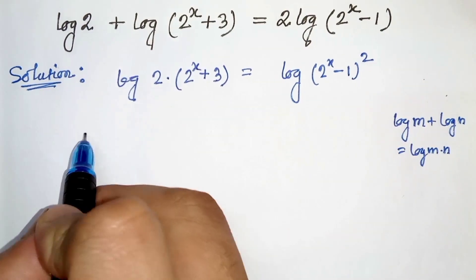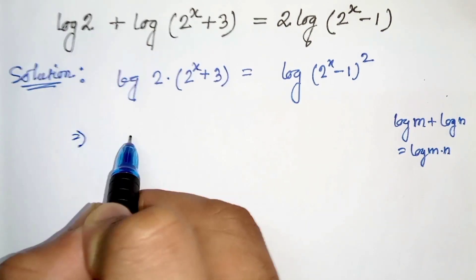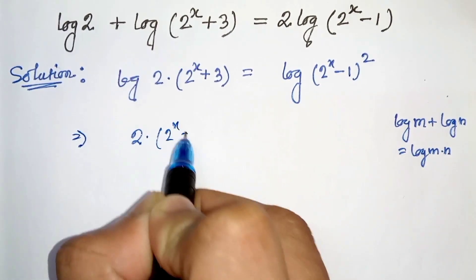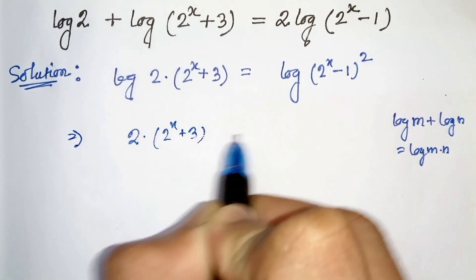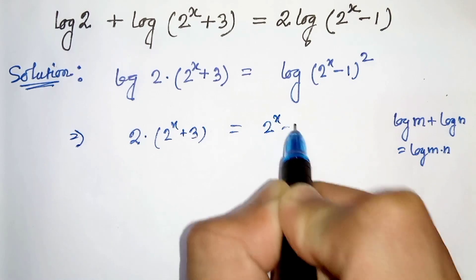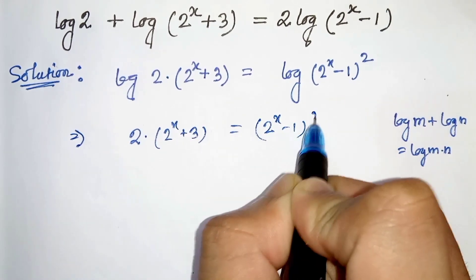Now comparing both sides we can write 2 times 2 to the power x plus 3, equals to 2 to the power x minus 1, whole square.